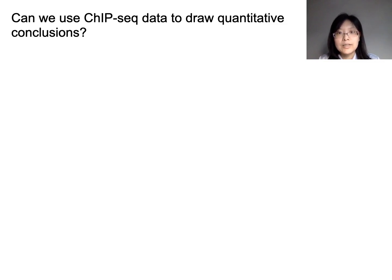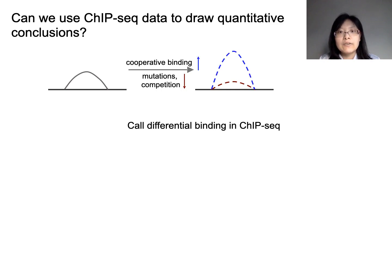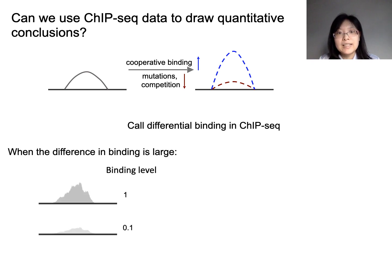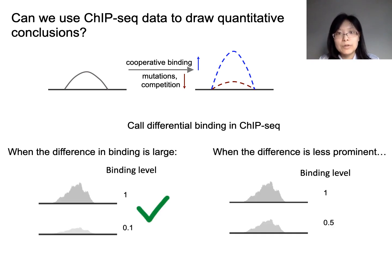To answer this question, we use one major application of ChIP-seq — calling differential binding — as an example. TF-DNA interactions tend to change, and the level of change needs to be evaluated. When this change is dramatic, it can be directly reflected by ChIP-seq. But in the scenario where the difference is less prominent, it is very likely that we cannot make a confident call. In such cases, we propose that extra knowledge, such as quantitative information from in vitro assays, is needed to call differential binding.